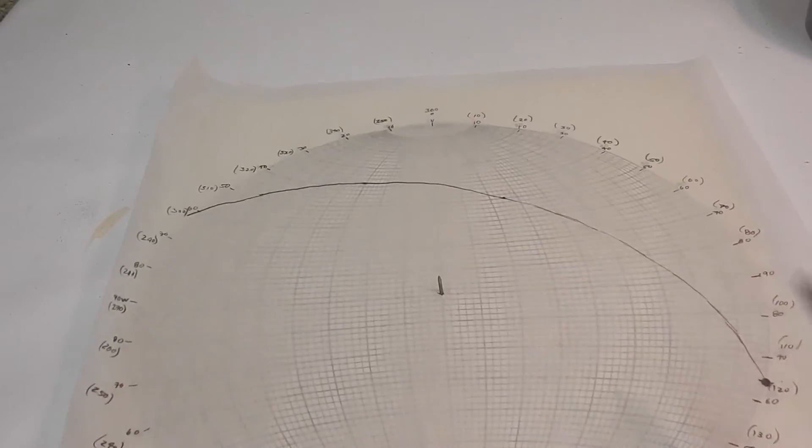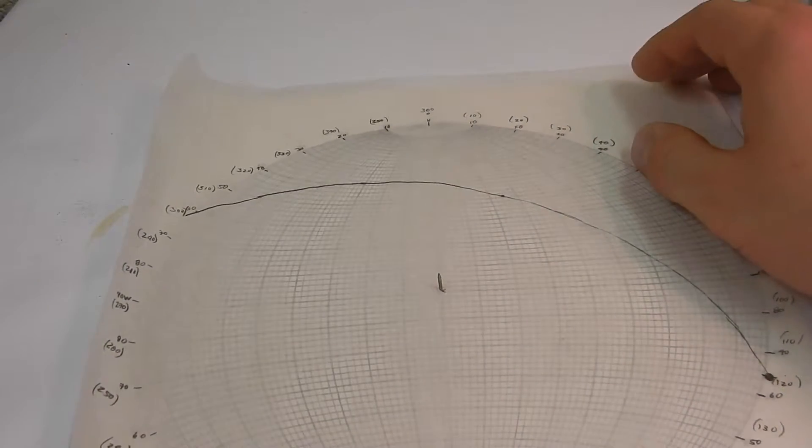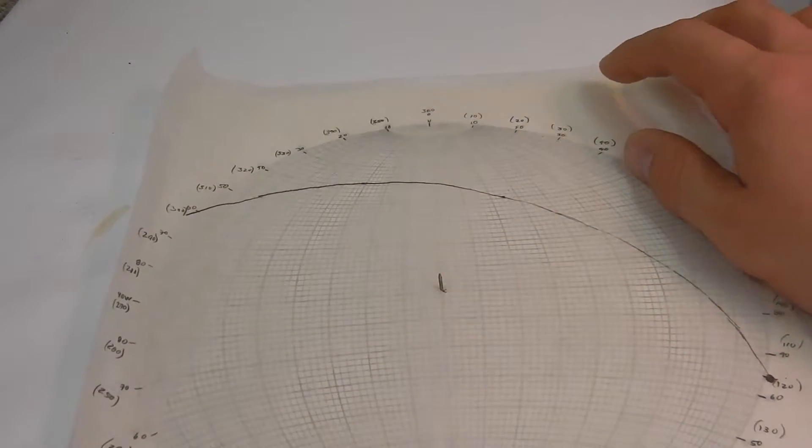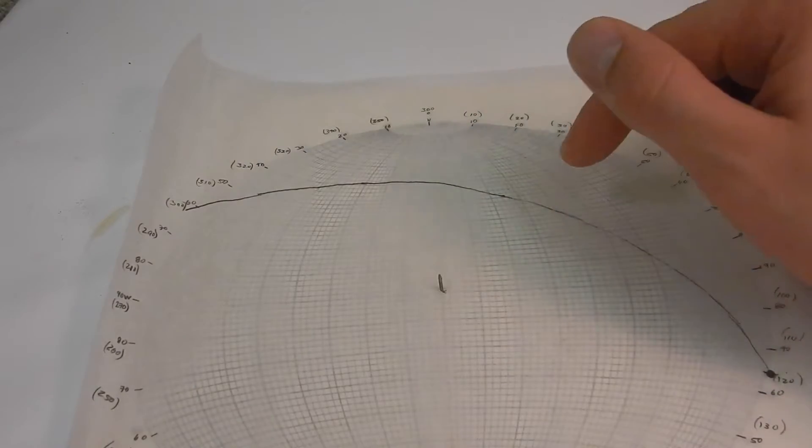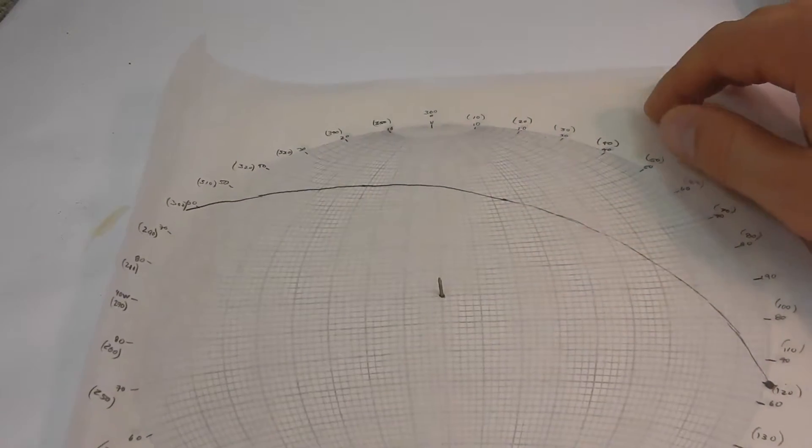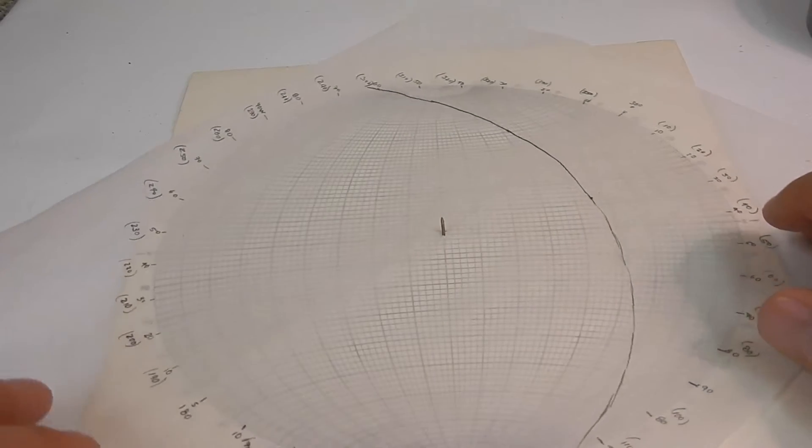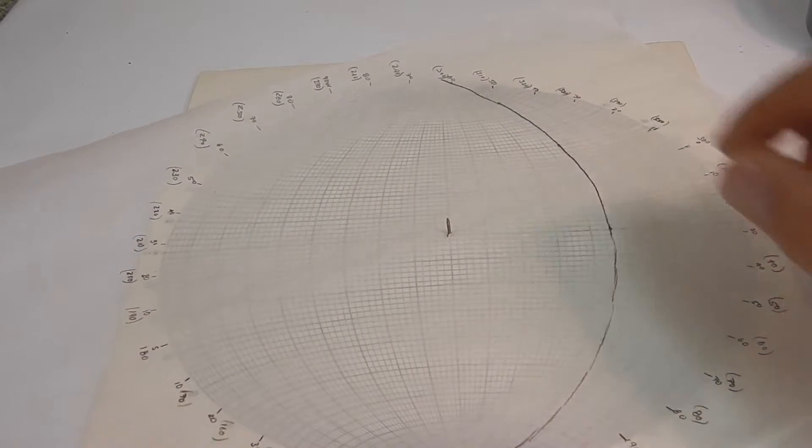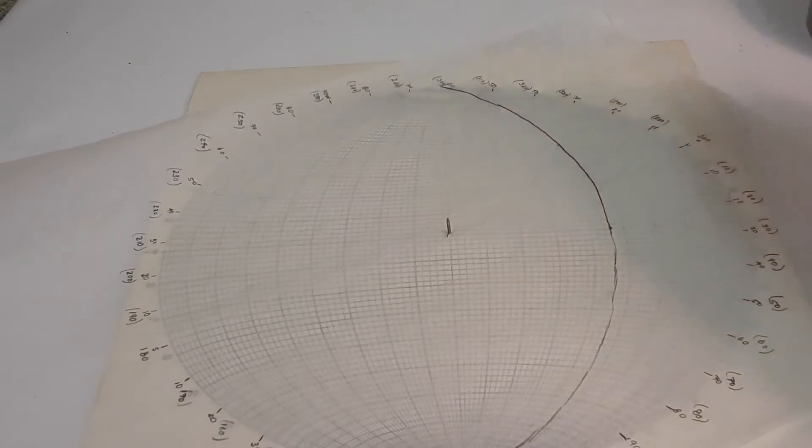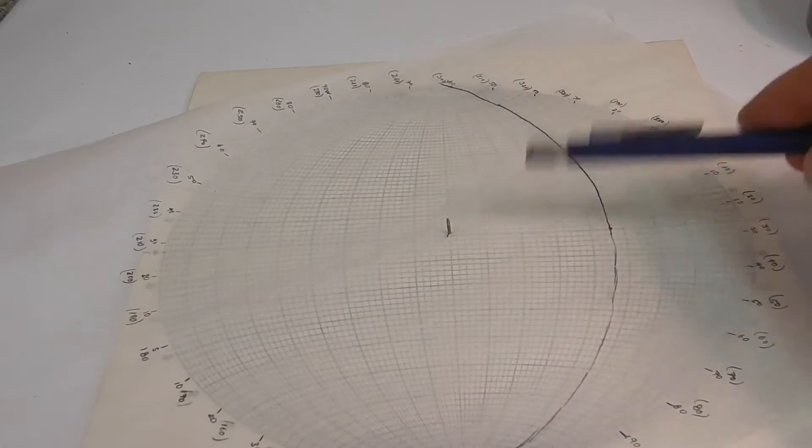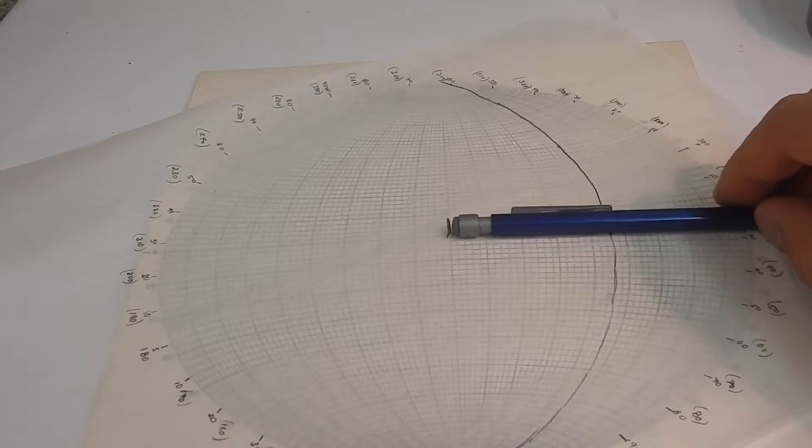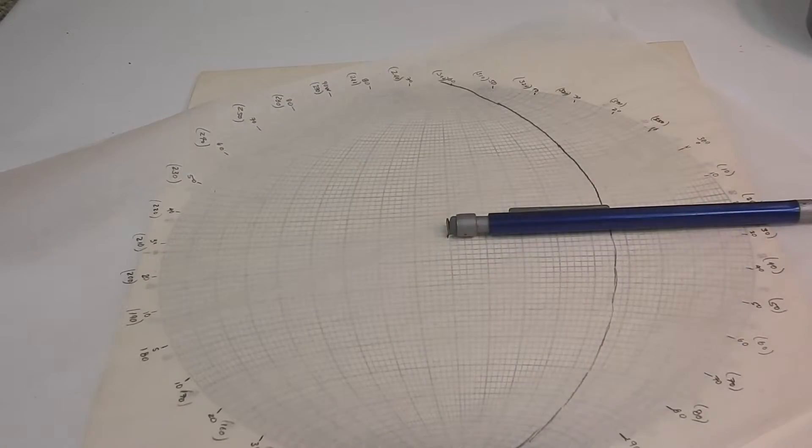So how do we plot a pole? We know it's 90 degrees from our plane. We're going to rotate our plane back to where our strike hits north-south.